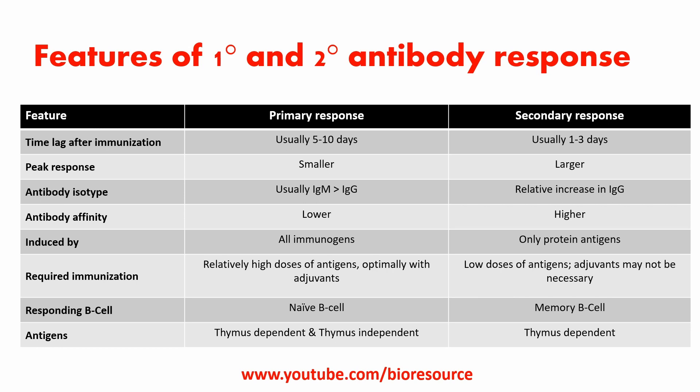Looking at the features of primary versus secondary antibody response: the time lag after immunization is five to ten days for the primary response, but only one to three days for the secondary response. The peak response is smaller in the primary and larger in the secondary. The antibody isotype is predominantly IgM greater than IgG in the primary, whereas there is a relative increase in IgG in the secondary. Antibody affinity is lower in the primary response and higher in the secondary.